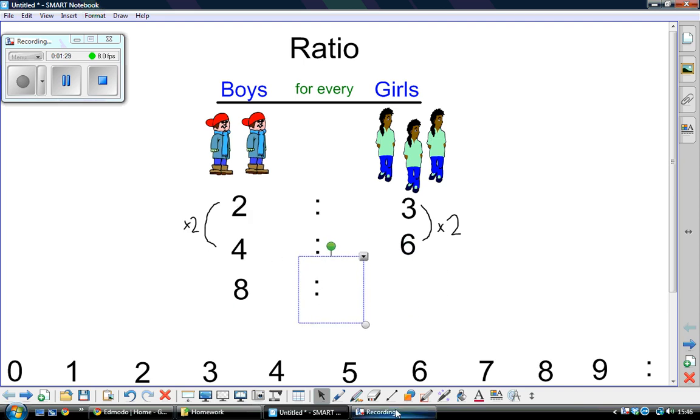Two, this time we've multiplied it by four. Two multiplied by four is eight. So we have to do the same to the other side. Three multiplied by four would be twelve. So we could say there are eight boys for every twelve girls.